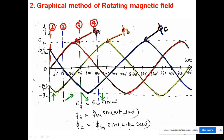For the third flux phi_c, it starts at 240° and follows the same sinusoidal pattern going to maxima and minima. At particular reference points, the values work out as sine of 60° and sine of −60°, giving values of +√3/2 * phi_max and −√3/2 * phi_max respectively. So these are the computed values for all three fluxes at the key points on the graph.